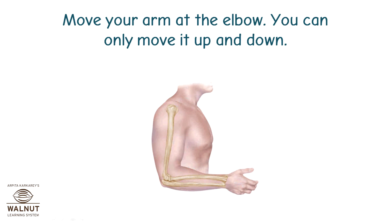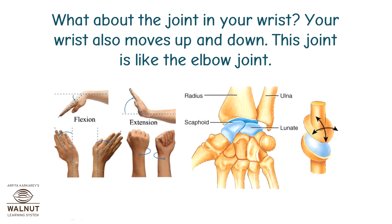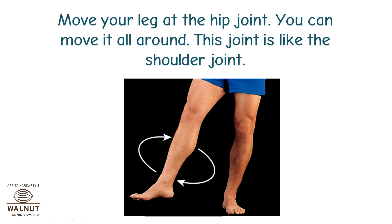Move your arm at the elbow — you can only move it up and down. You cannot move your elbow joint like your shoulder joint; this is a different kind of joint. What about the joint in your wrist? Your wrist also moves up and down, so this joint is like the elbow joint. Now move your leg at the hip joint — you can move it all around. This joint is like the shoulder joint.